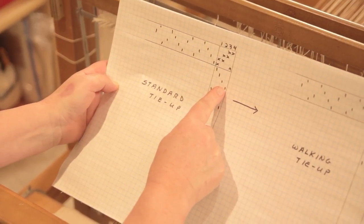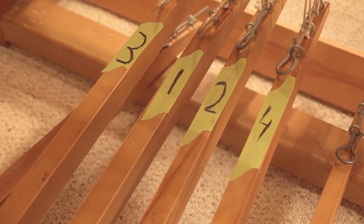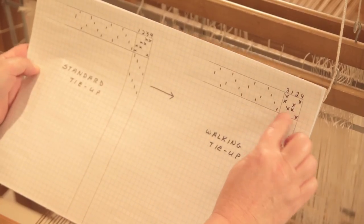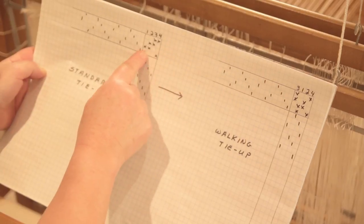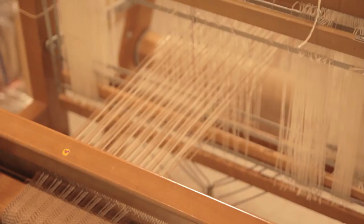And if I then label my treadles underneath my loom, then I'll always know which numbers they are and I never have to look at this. I can continue looking at this but weave in a walking order. Let me show you what I mean.